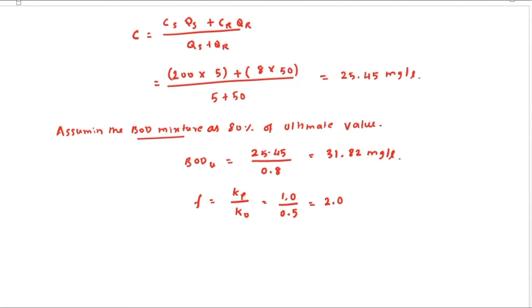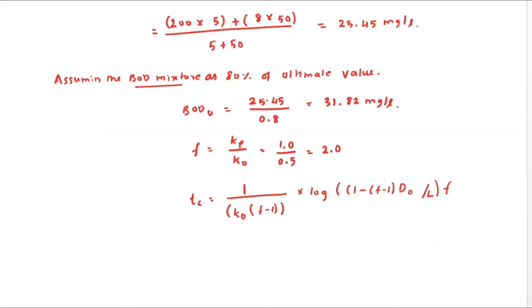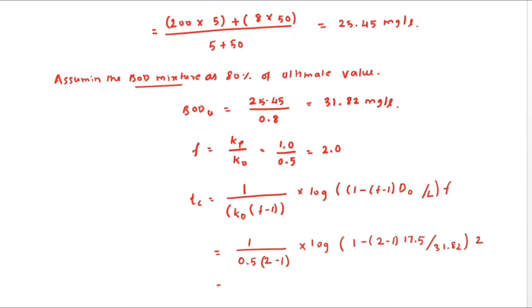Now using the formula for time of critical concentration: T_C = 1 ÷ (K_D × (F − 1)) × log[1 − ((F − 1) × D₀) ÷ (L × F)]. Substituting K_D = 0.5, F = 2, D₀ = 1.75, L = 31.82: T_C = 0.5333 days.